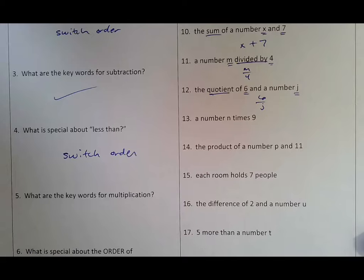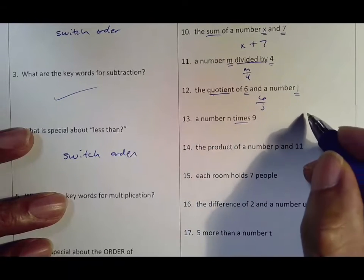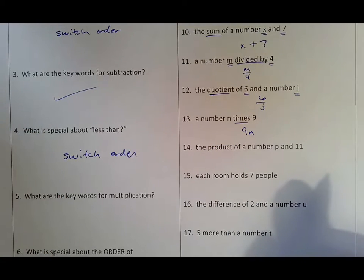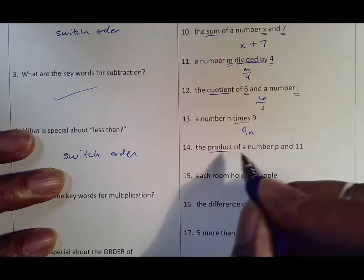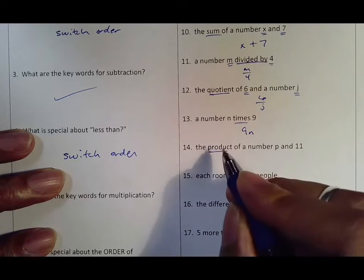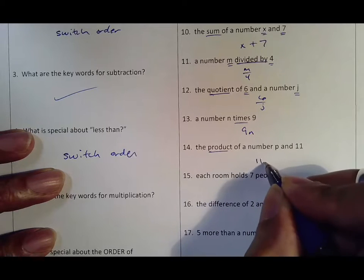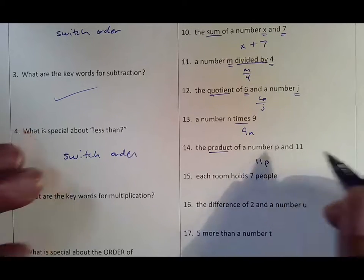Just be careful. Times means multiply—remember that when we multiply it's number first, variable second, no sign. Product, once again: product of a number p and 11, this means multiply. So therefore you're going to put 11p, number first, variable second.